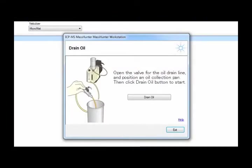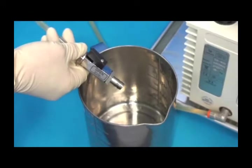In MassHunter, click the Drain Oil button. The oil will start to drain immediately.